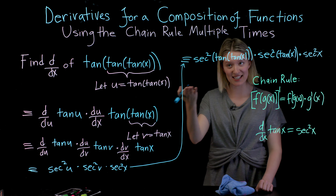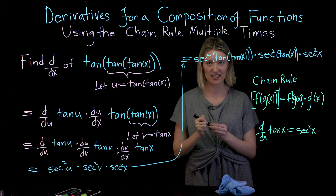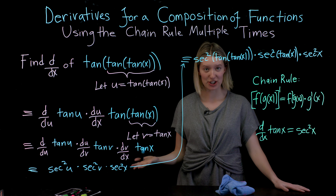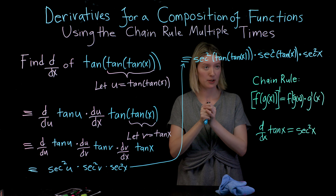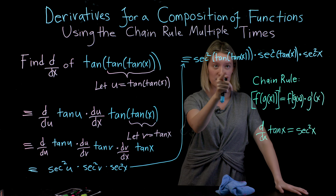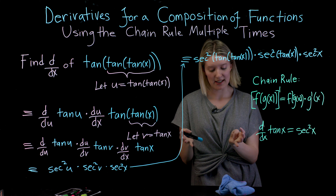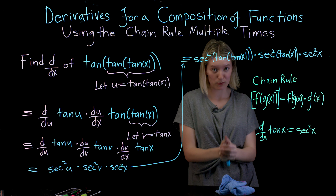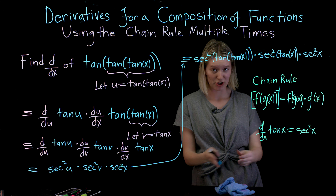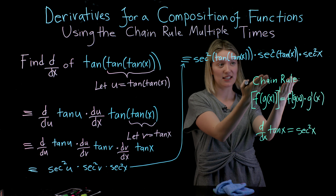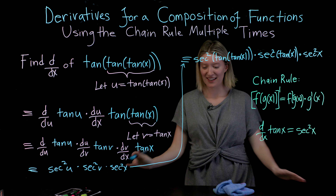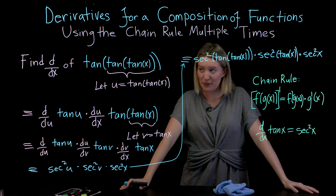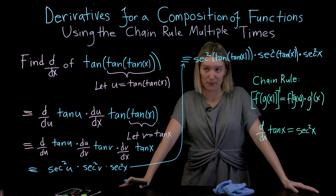Here we have a really long answer for our composition of functions. The last thing I'd ask myself is: is there a way I can simplify this further? In this case the answer is no. We're used to combining functions that start with the same part, but here we have a composition of functions — like a Russian doll with a tangent function inside another tangent function. Each piece is a totally different function, so there's no further simplification. This is the final answer — a really hard example, but hopefully helpful as you find yourself using the chain rule multiple times.